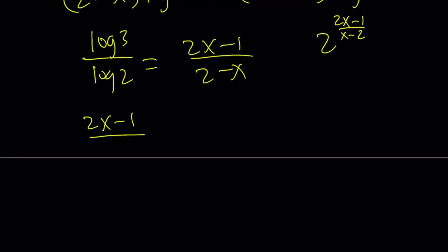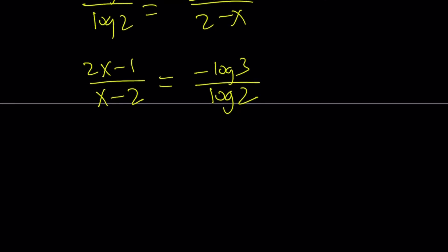If you can multiply both sides by negative 1, you're going to get the following. And this is just going to be the negative log 3 over log 2. Okay, we'll take care of the negative. Don't worry about it. So now,